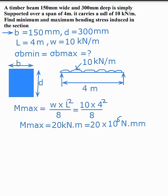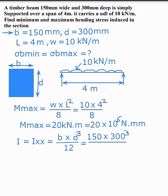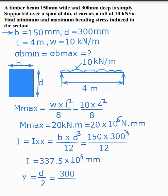Next, calculate the moment of inertia I, which equals BD³ divided by 12. With B equal to 150 mm and D equal to 300 mm cubed divided by 12, I equals 337.5 × 10⁶ mm⁴. Then y equals D divided by 2, so y equals 300 divided by 2, which gives 150 mm.